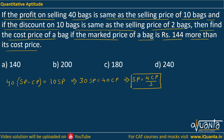Since we have to find the cost price in the end, we'll substitute every value in terms of cost price. Now, we're given that the discount on 10 bags — discount is always given on mark price, so discount equals mark price minus selling price. Discount on 10 bags equals selling price of 2 bags, giving us 10 MP equal to 12 SP.